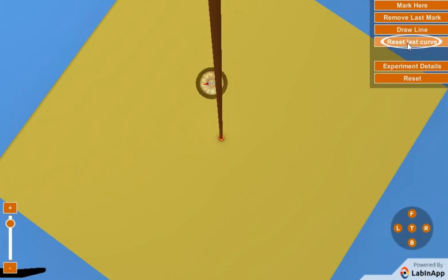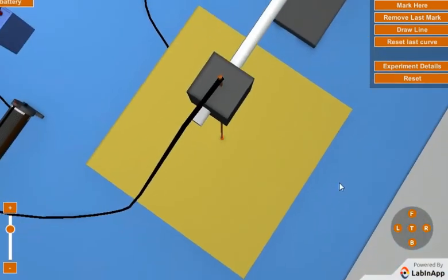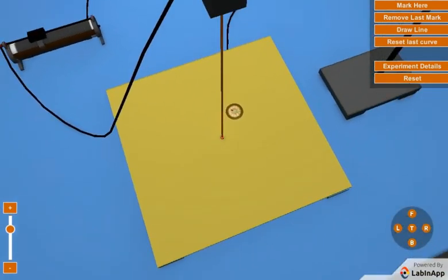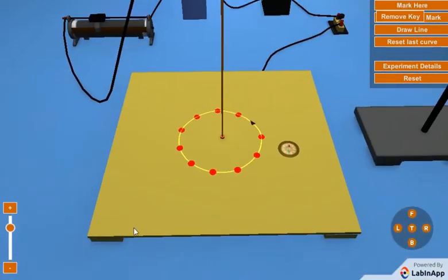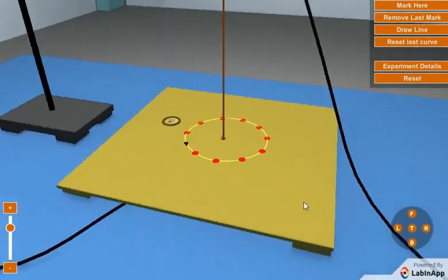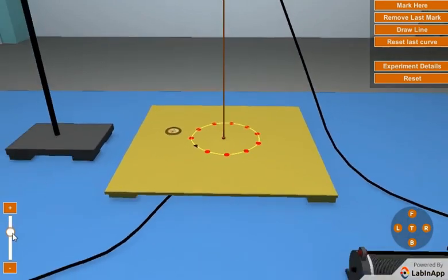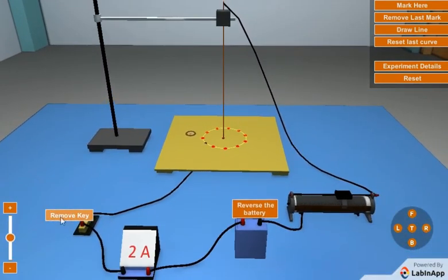Click here to reset the last drawn curve. After drawing one magnetic field line, remove the plug key.